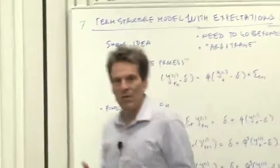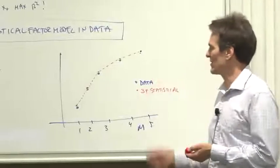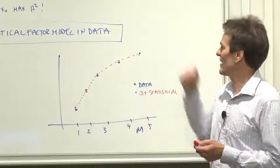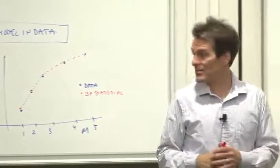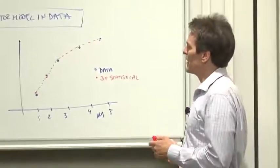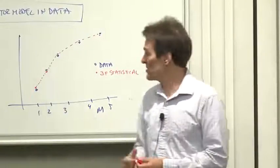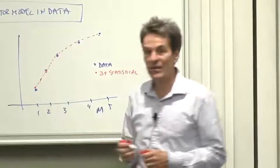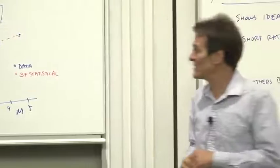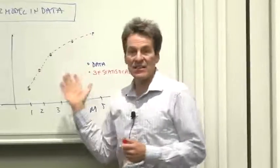What was wrong with what we had? Well, we need to go beyond the included securities. Our statistical model produced something that looked like this. If the data looked like the blue ones, the three-factor statistical model you saw fits very nicely, but it only fit the included securities. What price should we assign to a one and a half year bond? Are you allowed to do that linear interpolation? Maybe, maybe not.